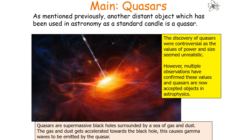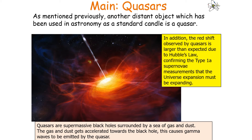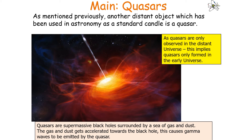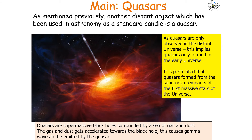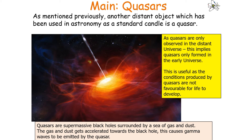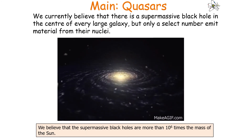Multiple observations have confirmed these values and quasars are now accepted objects in astrophysics. The redshift observed in quasars is larger than expected due to Hubble's law, confirming — alongside type 1a supernova measurements — that the universe's expansion must be accelerating. As quasars are only observed in the distant universe, this implies quasars only formed in the early universe. It was postulated that quasars formed from the supernova remnants of the first massive stars. Conditions produced by quasars are not favourable for life to develop, so it is useful that they are not present in our modern-day universe.